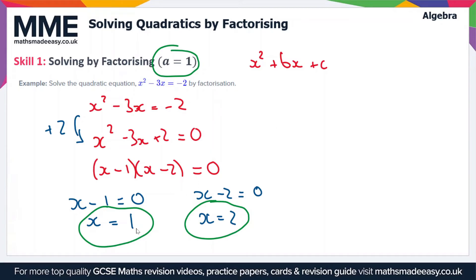As a side note, these solutions, x equals 1 and x equals 2, are known as the roots of the equation. This means that for the graph of y equals x squared minus 3x plus 2, this is where the graph will cross the x-axis, where y equals 0.